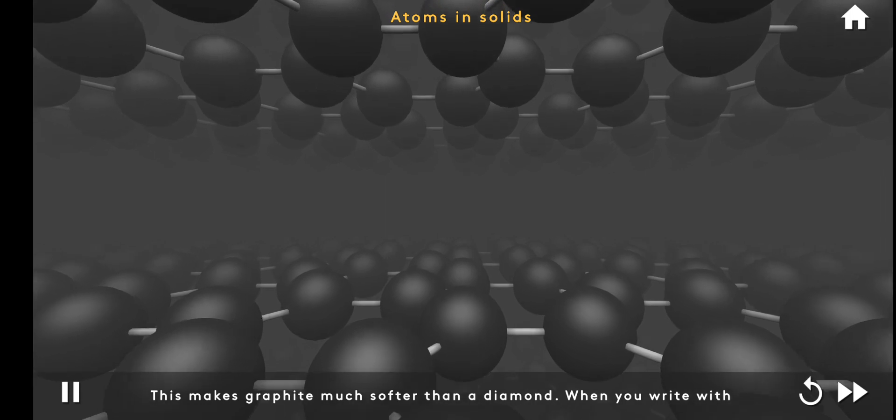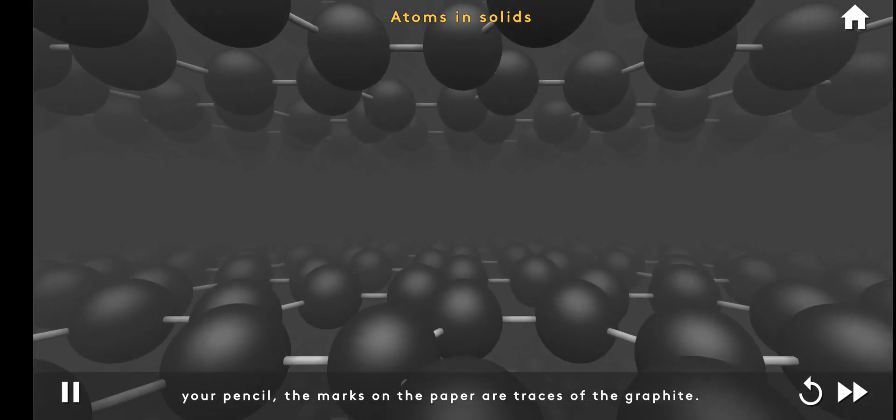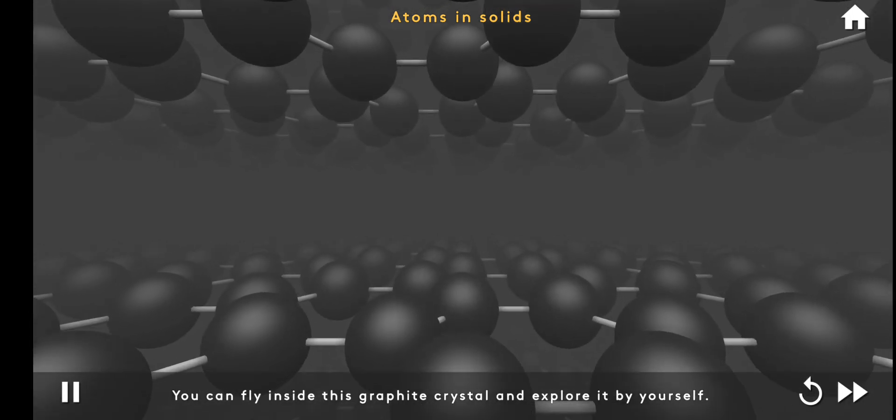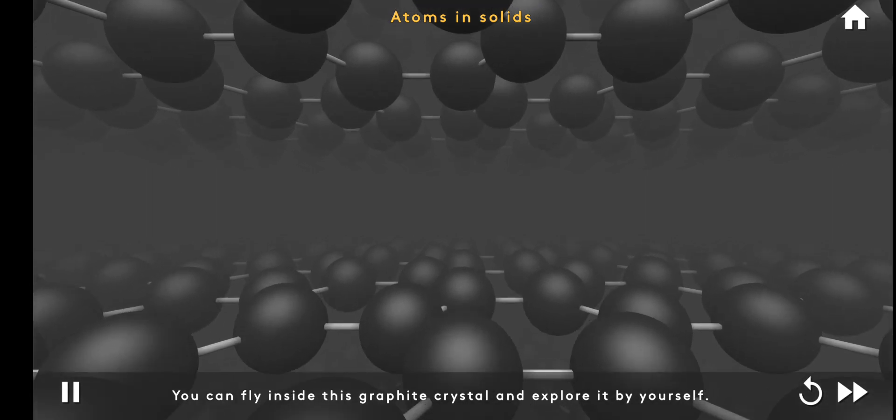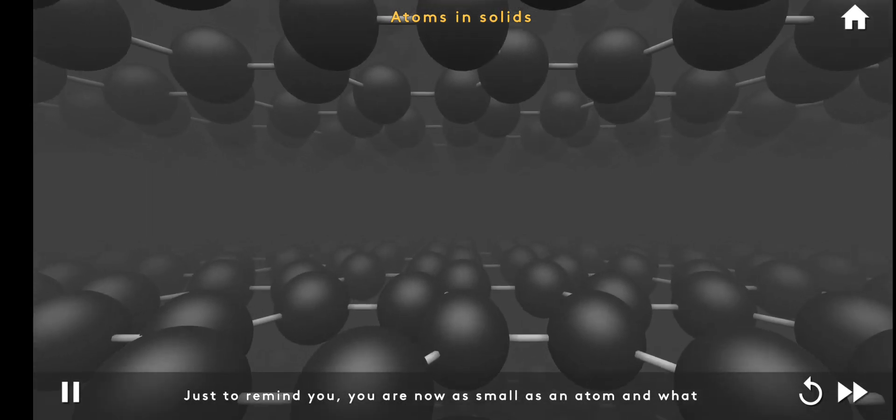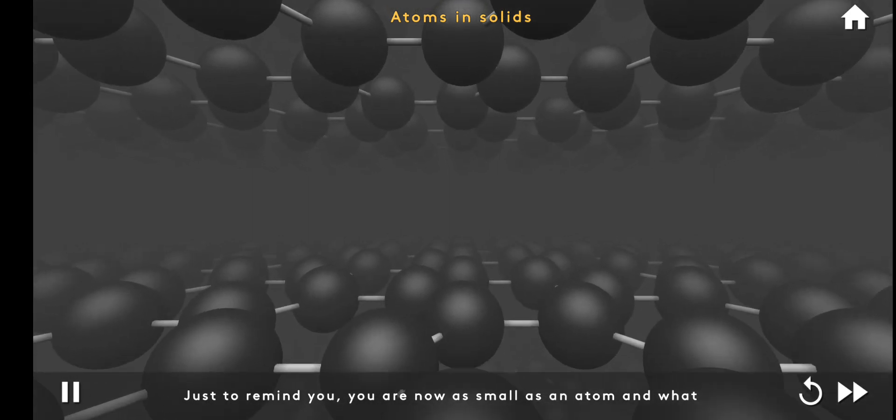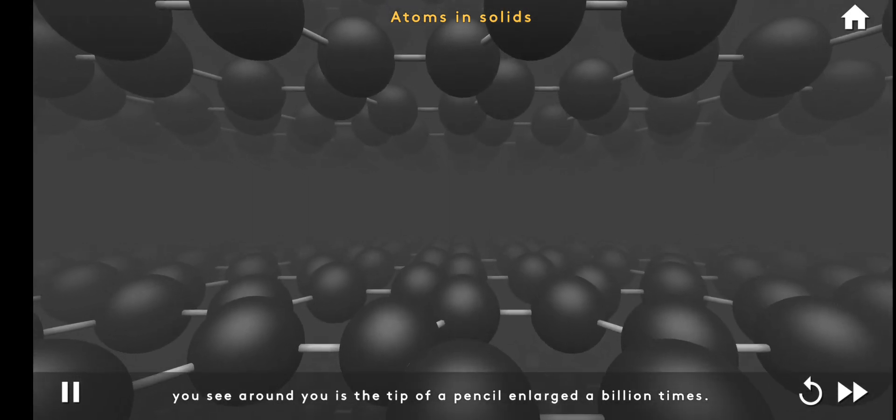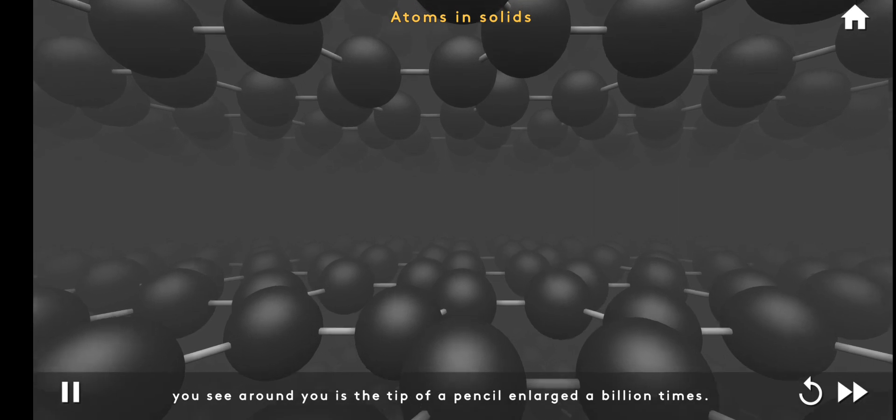When you write with your pencil, the marks on the paper are traces of graphite. You can fly inside this graphite crystal and explore it by yourself. Just to remind you, you are now as small as an atom, and what you see around you is the tip of a pencil enlarged a billion times.